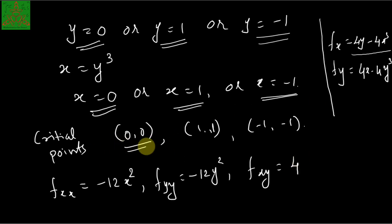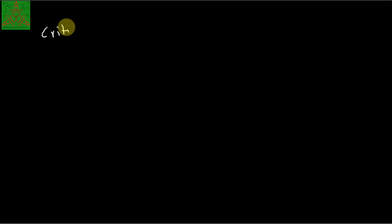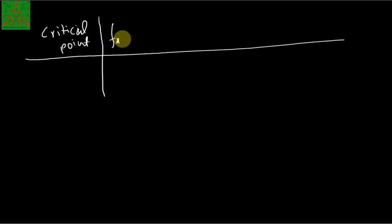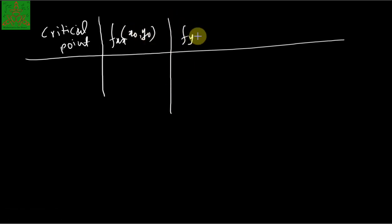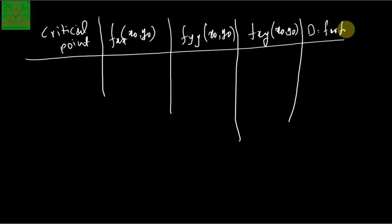At the critical points we now calculate fxx, fyy, fxy, and D equal to fxx·fyy minus fxy squared. I am making a table for that, listing the critical points, fxx at (x₀, y₀), fyy at (x₀, y₀), fxy at (x₀, y₀), and D at (x₀, y₀).